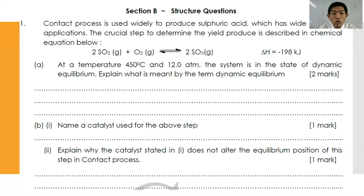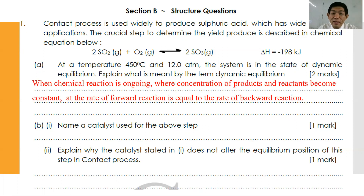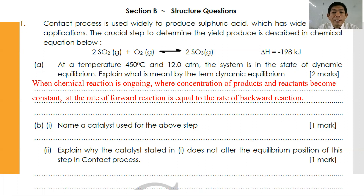These are the definitions you have to know on how to define dynamic equilibrium. You have to mention that when the chemical reaction is ongoing, the concentration of the products and reactants becomes constant, and the rate of the forward reaction is equal to the rate of the backward reaction. Try your best to remember this.